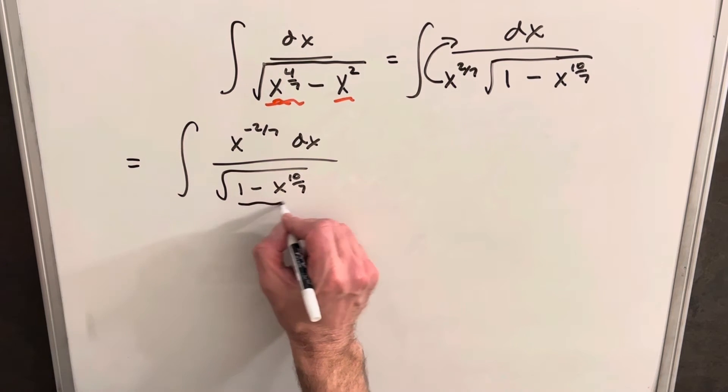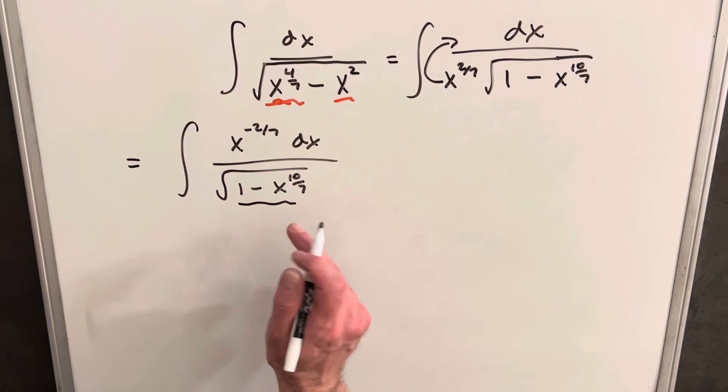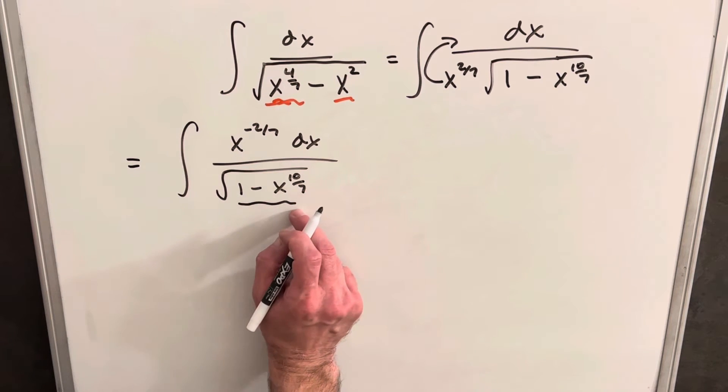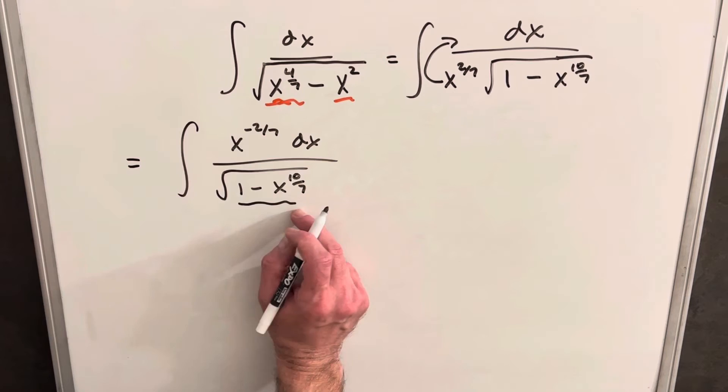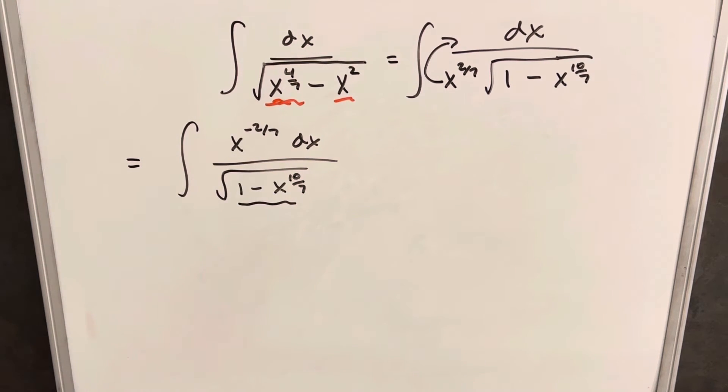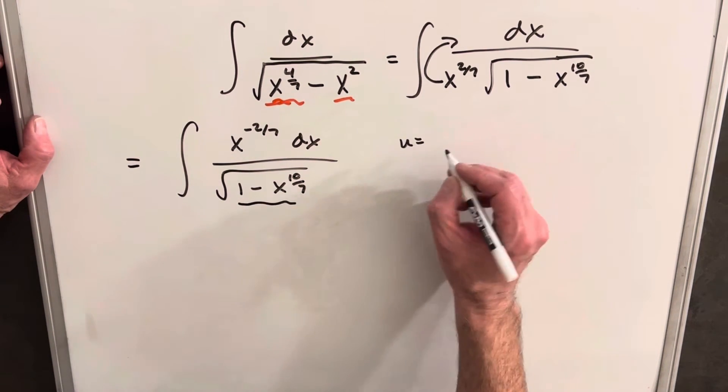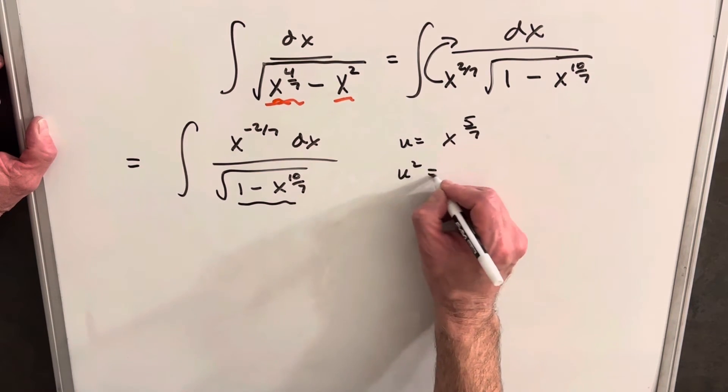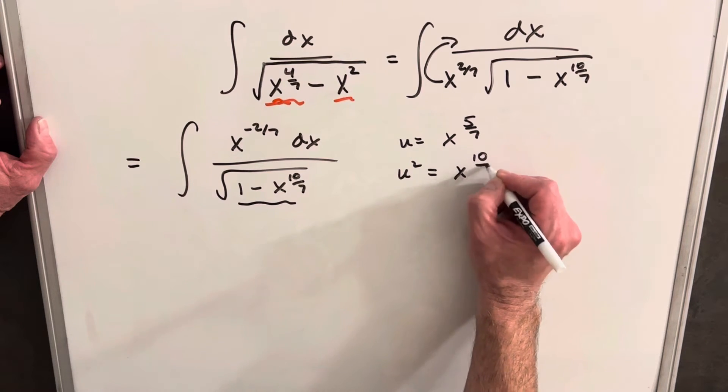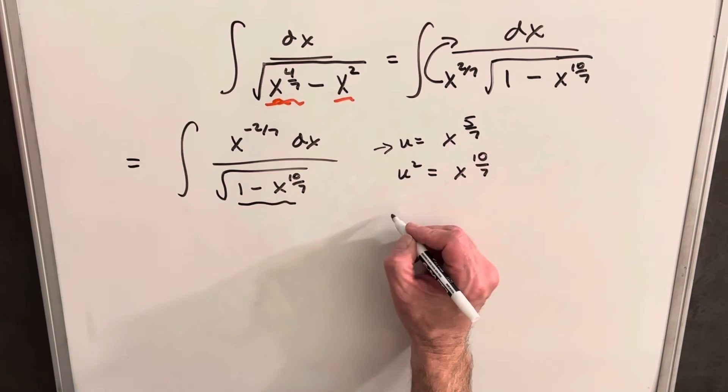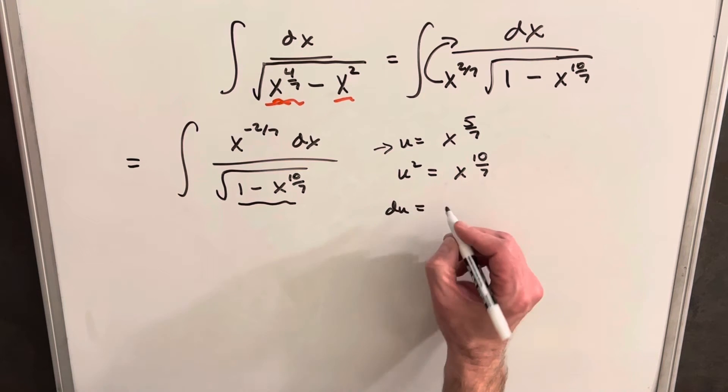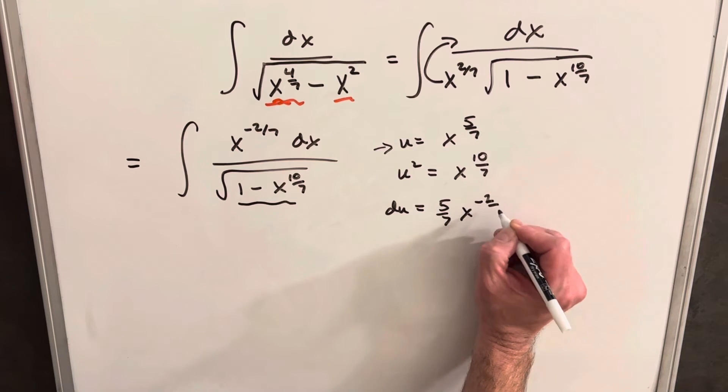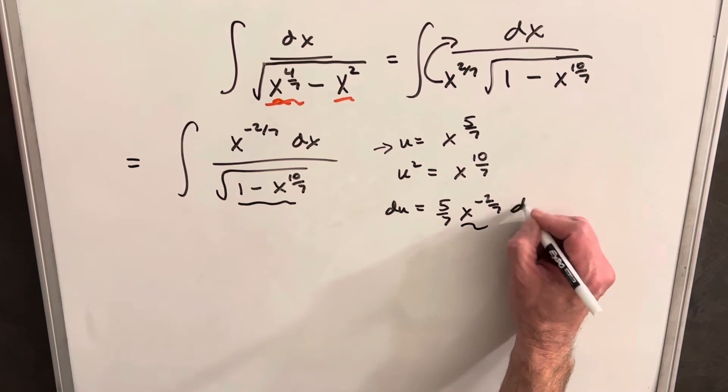Usually I'd like to try to make the whole thing my u because that's going to be the cleanest way. But just looking at it, that's not going to work too nicely because when we take the derivative, the derivative of this is going to be x to the three over seven. We'd like it to line up with an x to the minus two sevenths. But what we can do is write our u as x to the five over seven, just noticing that u squared is x to the ten over seven. Let's take the derivative. Our du is going to be five over seven x to the minus two over seven dx.